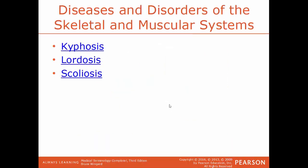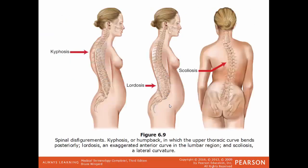Three abnormal spinal curvatures: kyphosis, also known as hunchback, is where the upper back curves more anteriorly than it should. Lordosis, or swayback, is where the lower back curves more anteriorly than it should — the opposite of humpback. Scoliosis is a lateral curvature of the spine, curving to the left or right instead of straight. These are illustrated by showing kyphosis curving forward at the top, lordosis curving inward at the lower back forcing the belly out, and scoliosis as an abnormal sideways deviation.